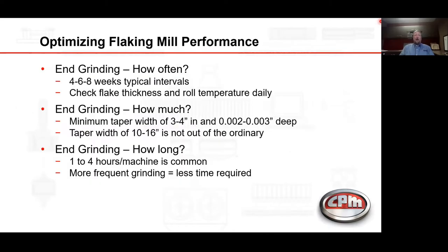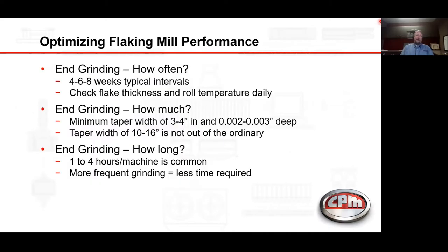For roll-end grinding: how often do we need to grind the ends? Every four to six weeks is typical. We must check flake thicknesses and roll temperature daily. How much do we remove? The minimum taper width is three to four inches and two to three thousandths deep; however, a taper width of 10 to 16 inches is not out of the ordinary. How long do we need to grind? One to four hours per machine is common. More frequent grinding will require less total time overall.